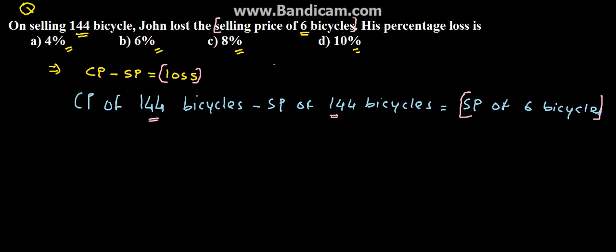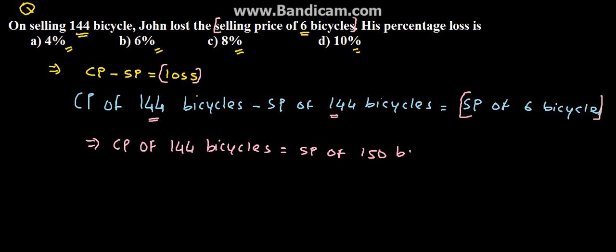Therefore, CP of 144 bicycles equals SP of 150 bicycles. We derived this by transferring the SP of 144 to the other side — since both are selling price, it becomes 144 plus 6, which is 150. So CP of 144 bicycles equals SP of 150 bicycles.